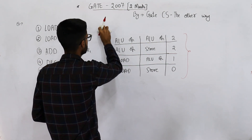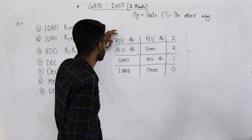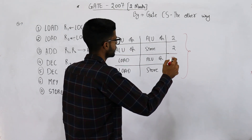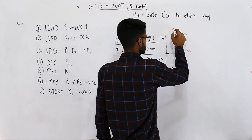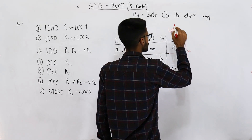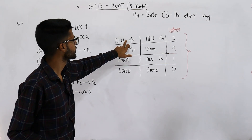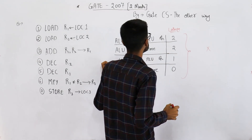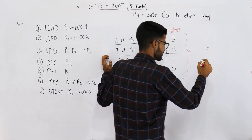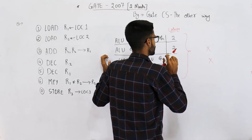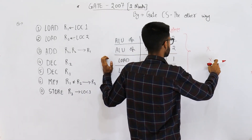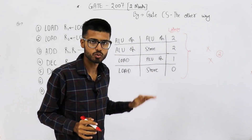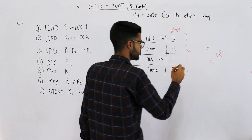Now let's analyze this table. The first column is the instruction producing the result, the second column is the instruction using that result. For example, if there is an ALU operation that produces result X, and another ALU operation which uses result X, then according to the table there has to be a latency of two — that means two clock cycles between these two instructions.